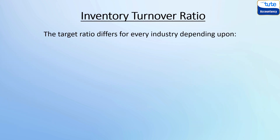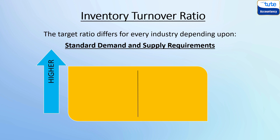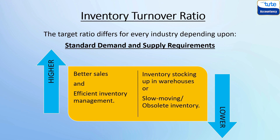The target ratio differs for every industry depending upon the standard demand and supply requirements. However, a higher ratio is an indicator of better sales and efficient inventory management, whereas a low ratio shows the opposite in the form of inventory stocking up in warehouses due to poor sales or slow moving or obsolete inventory.